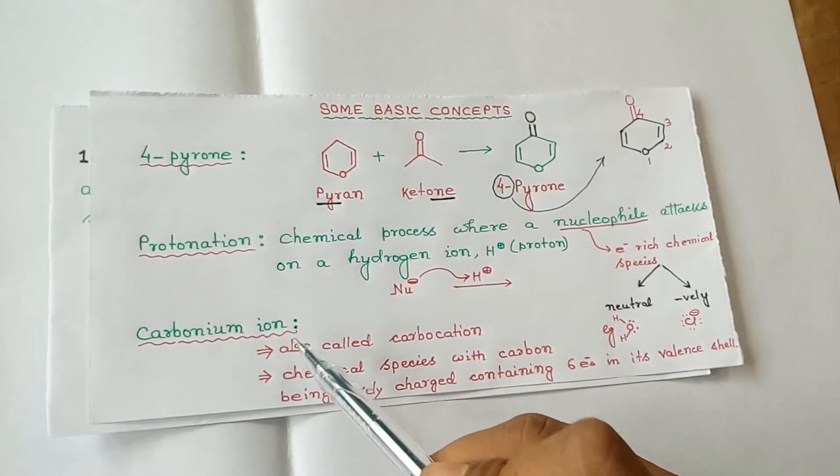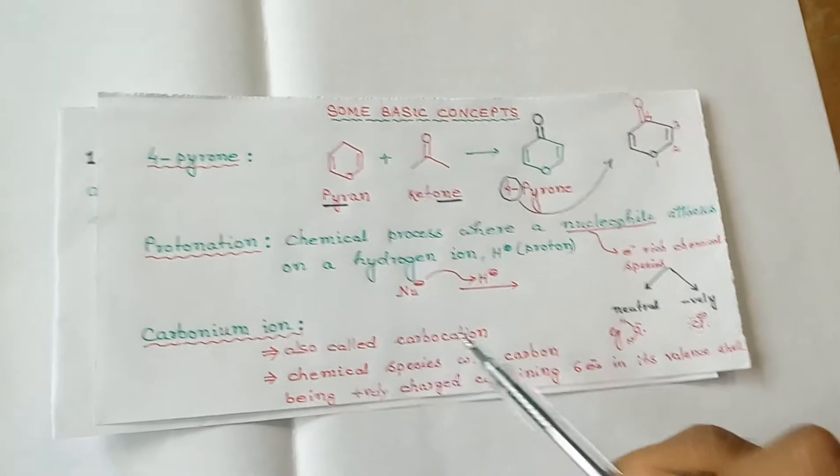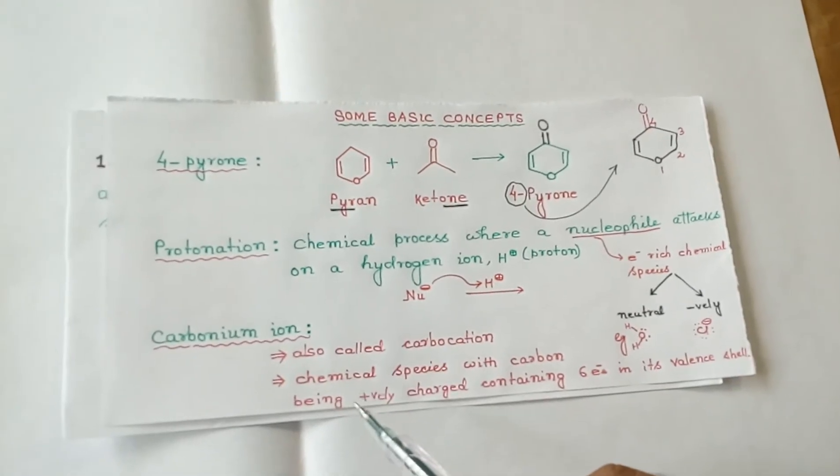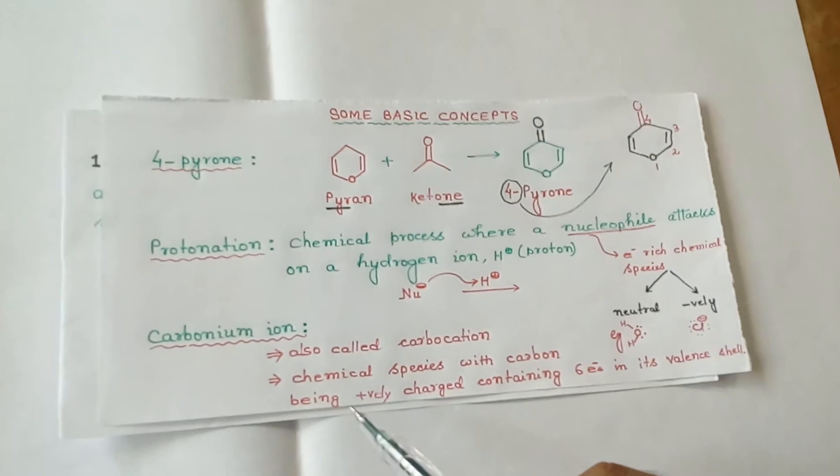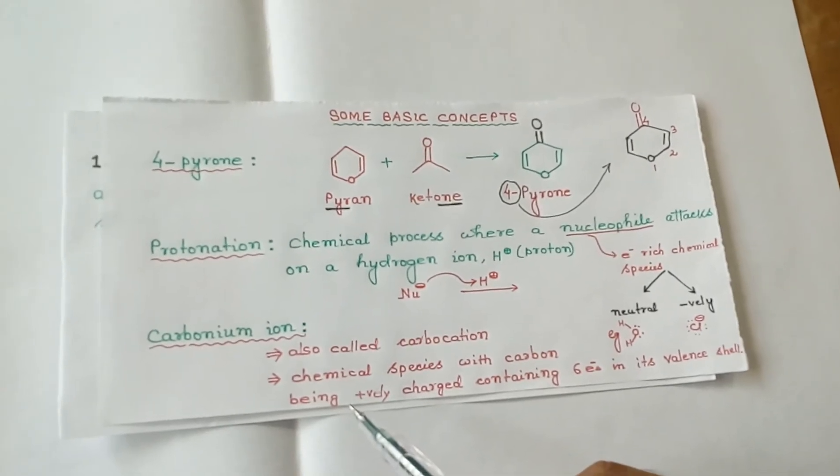Carbonium ion, also known as carbocation, are chemical species with carbon being positively charged and they contain six electrons in the valence shell.